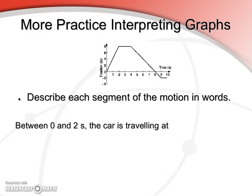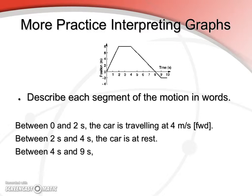Okay, describing the segments in words, you should practice doing this. It's a good exercise, and it will be on various places. So, we have the first segment between zero and two seconds. The car is traveling at four meters per second forward. Right? Its displacement is increasing, and it's at a constant rate. And our slope gives us four meters per second. Now, what about between two and four seconds? Well, we can see that our slope is zero, so our speed is zero, and our velocity is zero. The car is at rest.